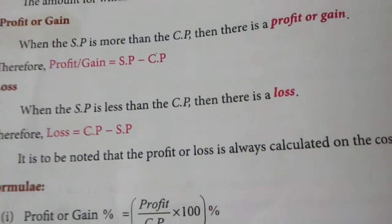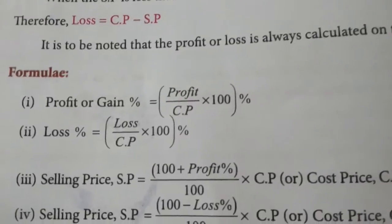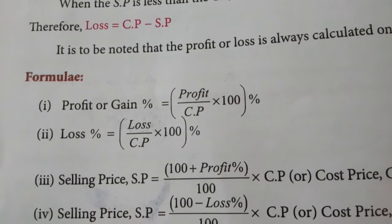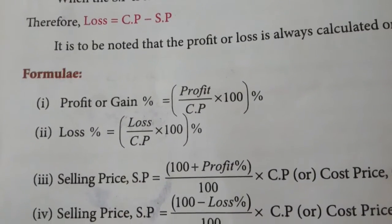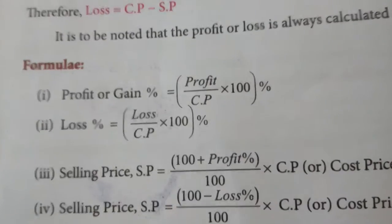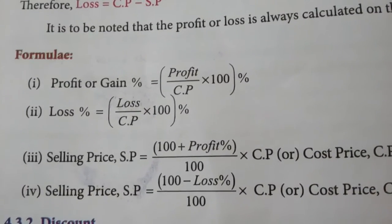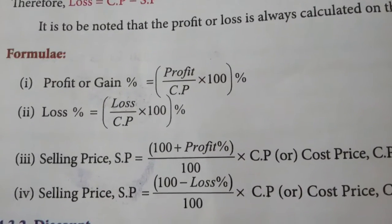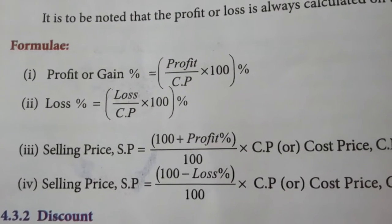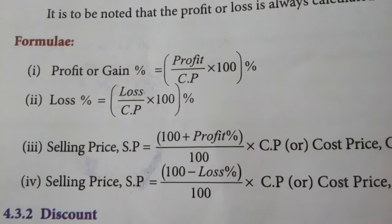Now we are going to see the formulas. Profit or gain percentage equals profit divided by CP, multiplied by 100. Loss percentage equals loss divided by CP, multiplied by 100. For selling price, if you know either SP or CP, you can use this formula when you know the profit or loss: SP equals (100 plus profit) divided by 100, multiplied by CP.